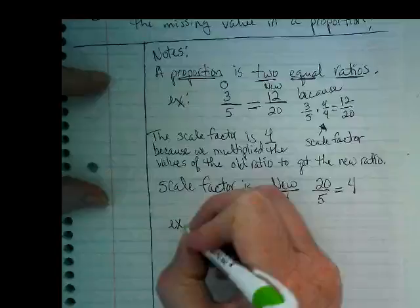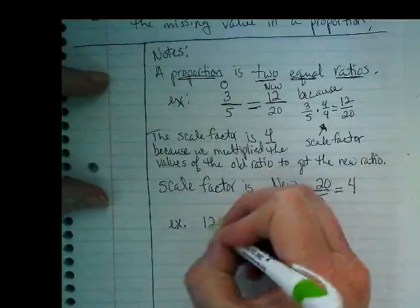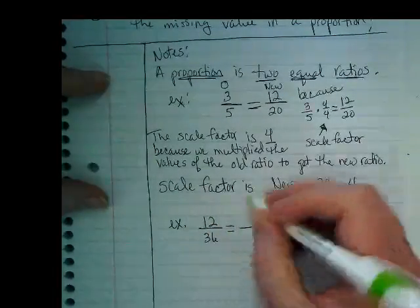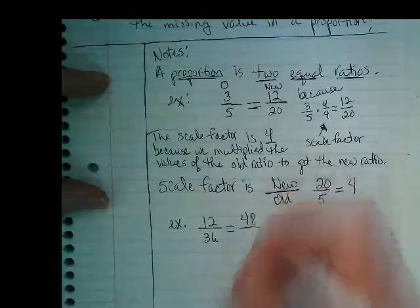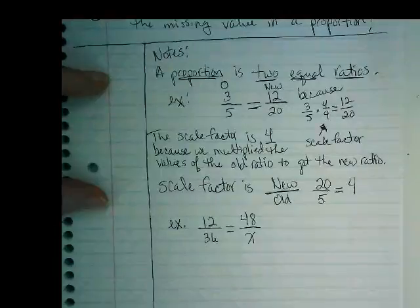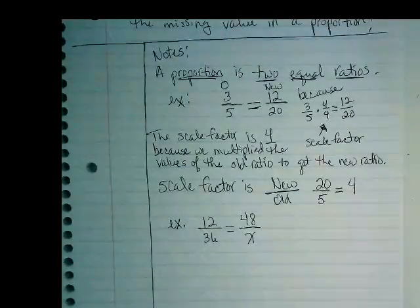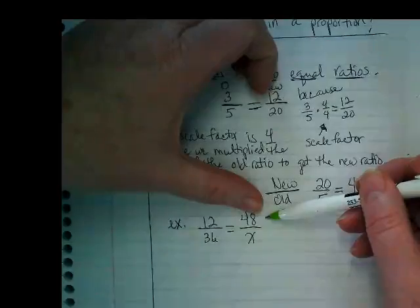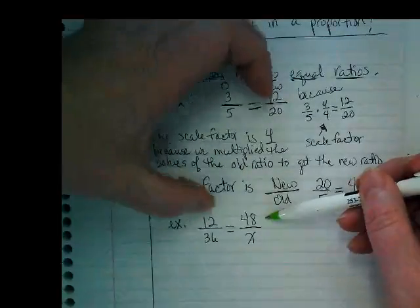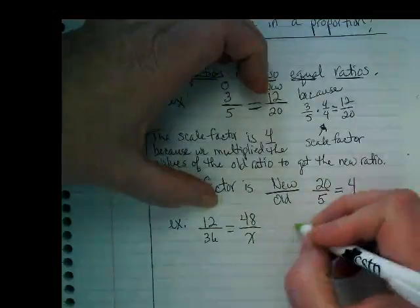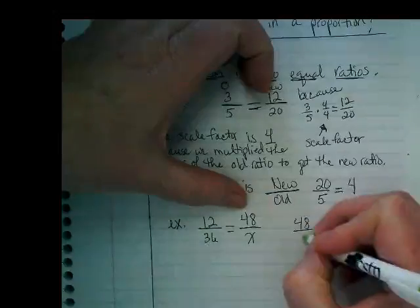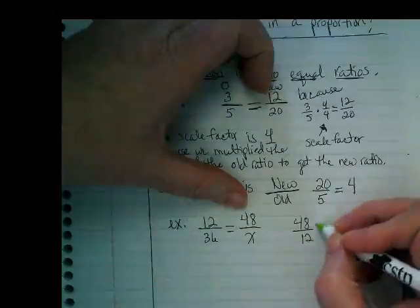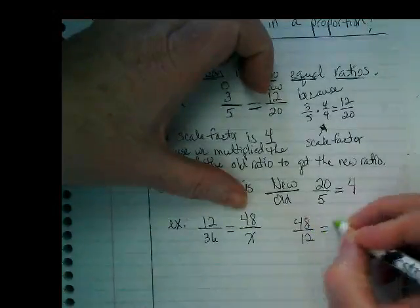Let's do this example. What if you did 12 over 36 is equal to 48 over x? This 48 we know in our second ratio. And what does it go with in the old one? The 12. So I can take and divide 48 divided by 12. Oh my gosh, I'm going to get 4 again. That's funny. I didn't mean to. 48 divided by 12 gives us a scale factor of 4.